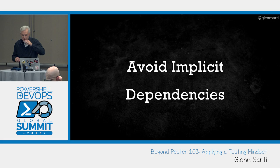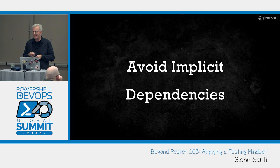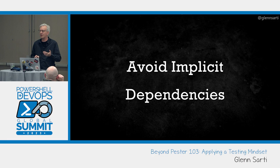My second tip is to avoid implicit dependencies. In C#, this is more formally known as inversion of control, or you may have heard of dependency injection. You can kind of do this in PowerShell, but PowerShell doesn't really have this concept. The point is to avoid PowerShell functions using or depending on things outside of their own scope, because that makes them harder to test.